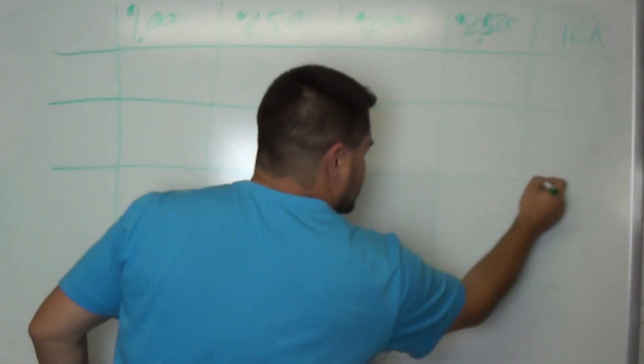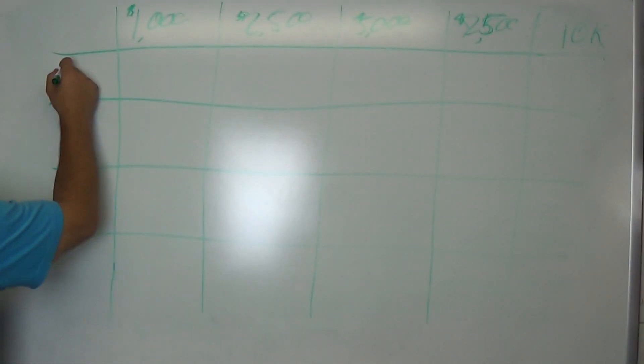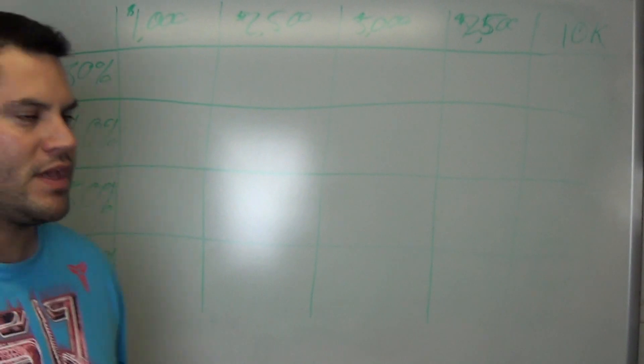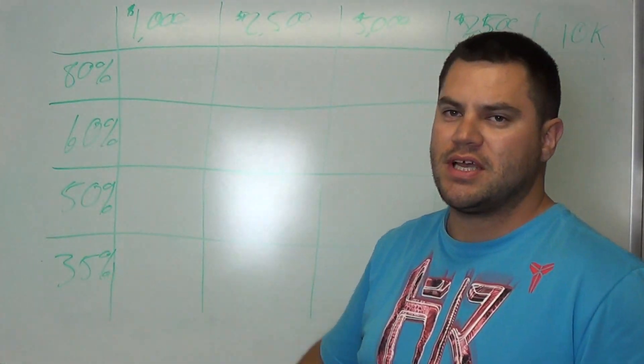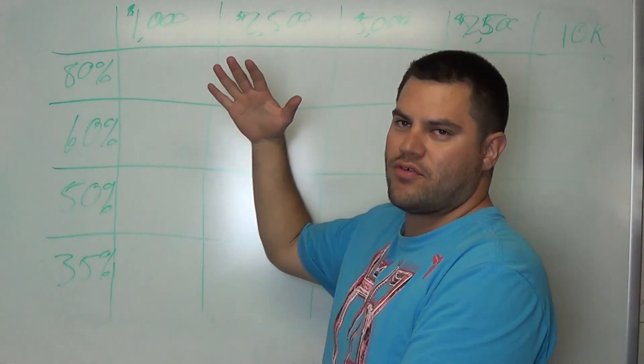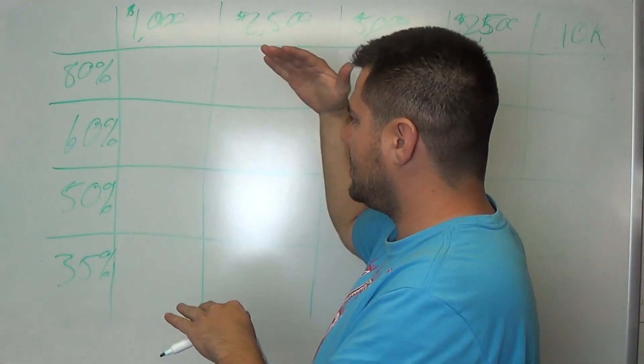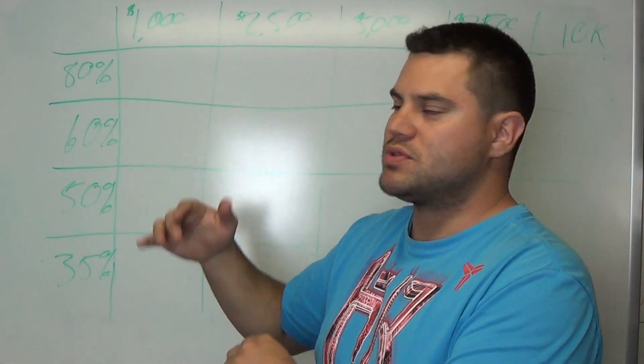So we have 80%, 60%, 50%, and 35%. The reason I went with these numbers, the 80%, 60%, 50%, and 35%, is because that is a wide variety. It covers a huge portion of people's sales.